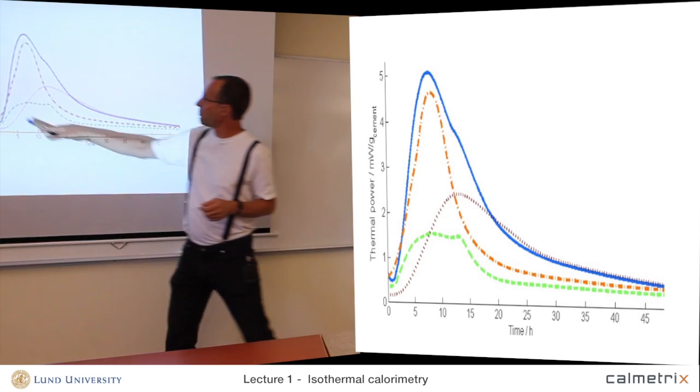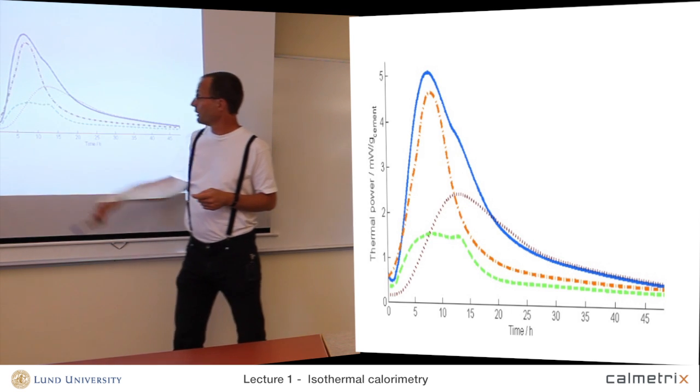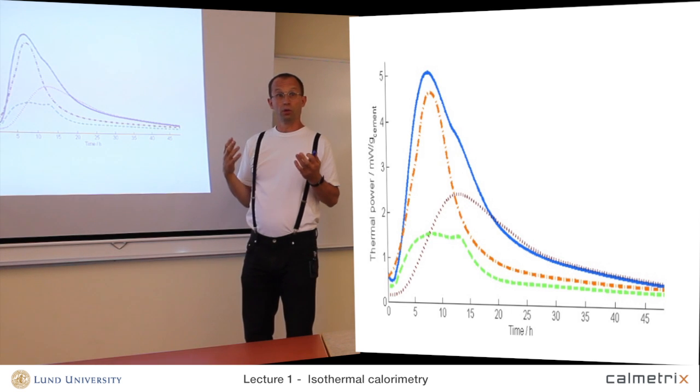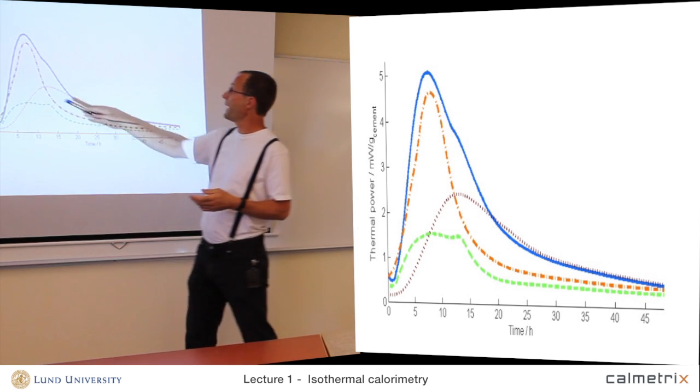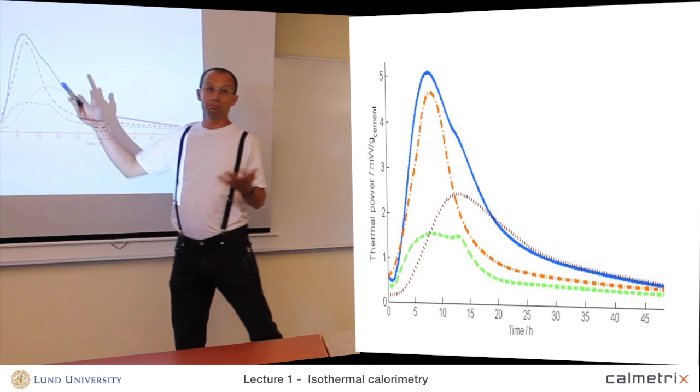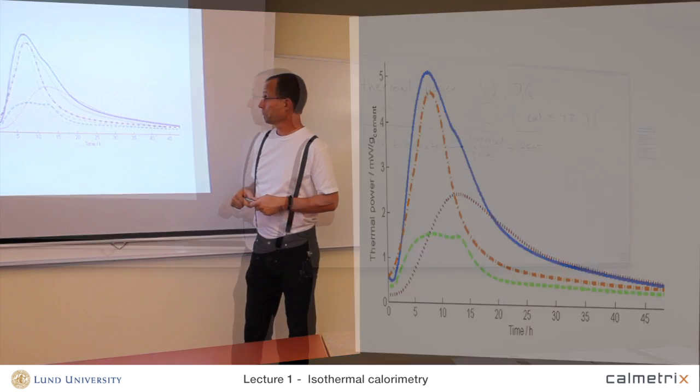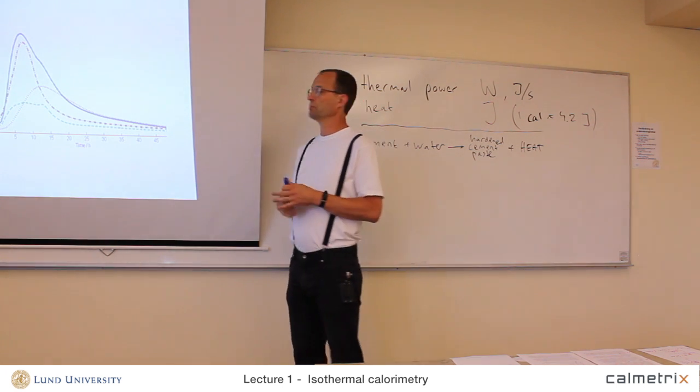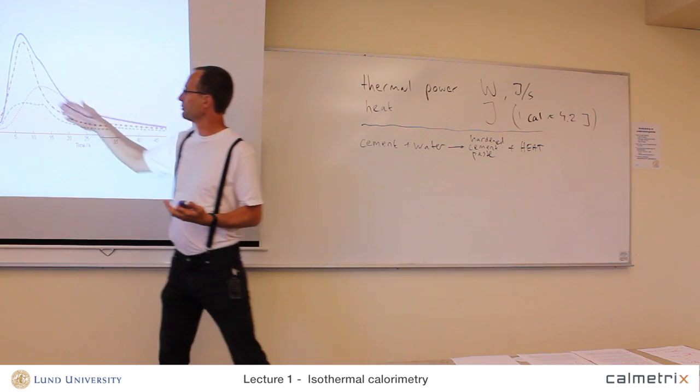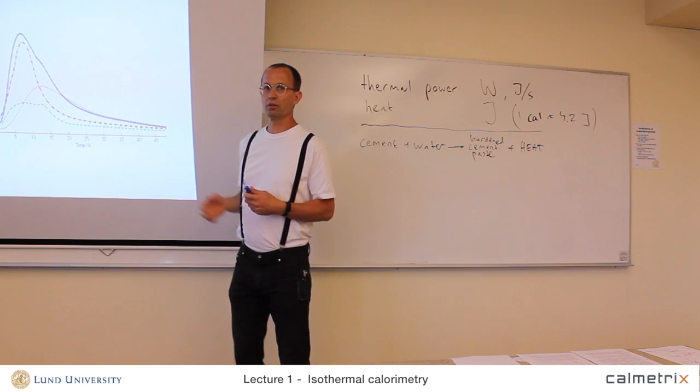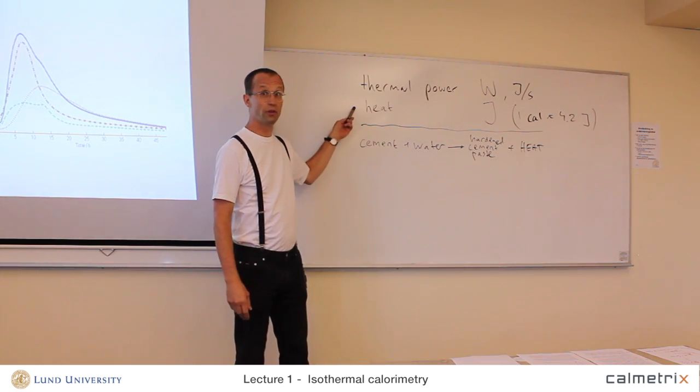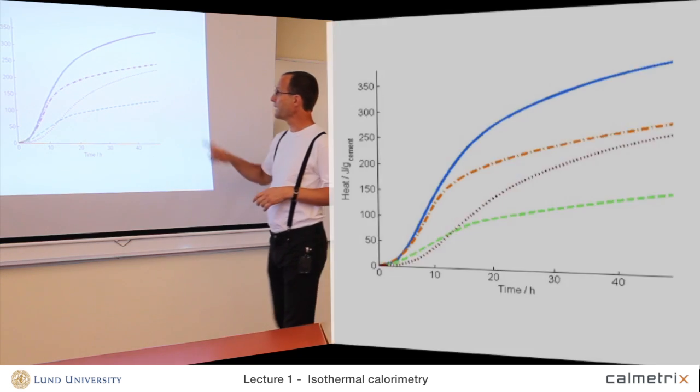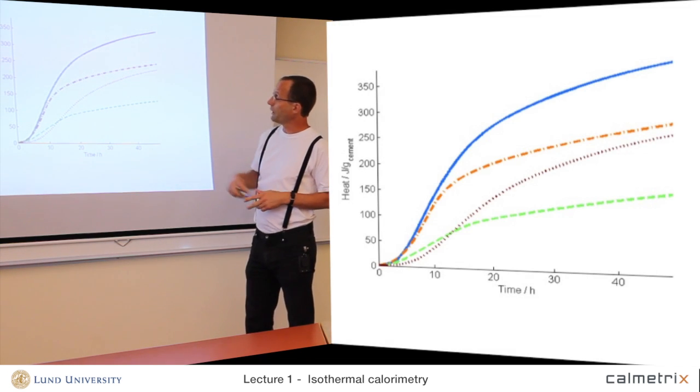As I said earlier, we have the thermal power, milliwatts per gram cement here. That's very typical that we scale with the mass of the sample, because then we can compare different samples that have different masses. So this is thermal power, this is the primary measurement variable, this is what we get out from the calorimeter. If we integrate this, we will get the heat, and I can show you the heat here too, the same process, the same curves.